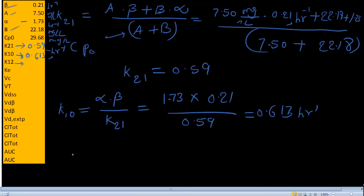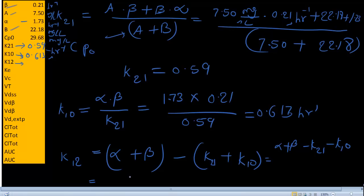Now let's calculate k12. k12 is equal to alpha plus beta minus, you can say k21 plus k10. Don't get confused, we can rewrite this equation as alpha plus beta minus k21 minus k10. Either way it's the same. So the calculations: alpha is 1.73 plus beta that is 0.21 minus k21 which is 0.59 minus k10 that is 0.613.